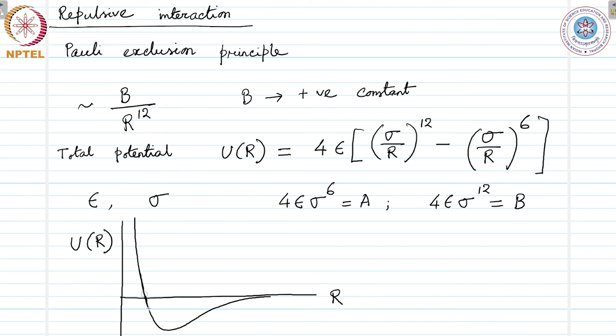There would be an equilibrium distance where the potential is minimum. If we go beyond the equilibrium distance, the potential keeps increasing and at large distance asymptotically reaches U(r) = 0. Here the potential is attractive; here it is repulsive. This is called the Lennard-Jones potential.